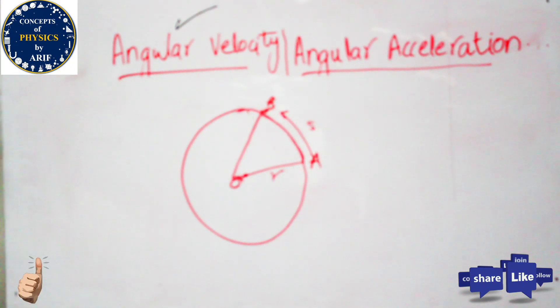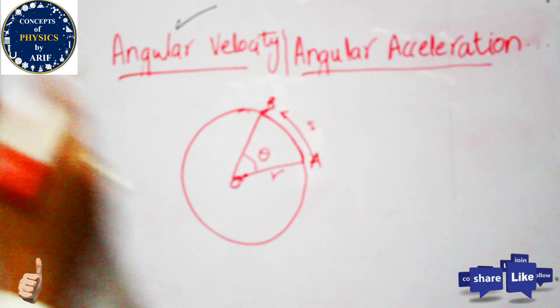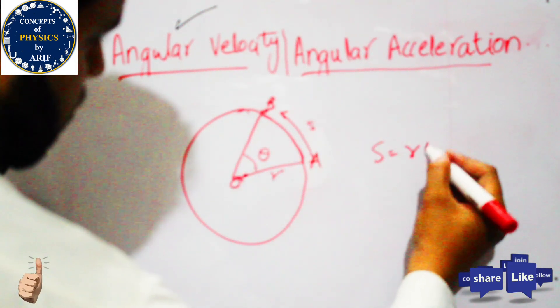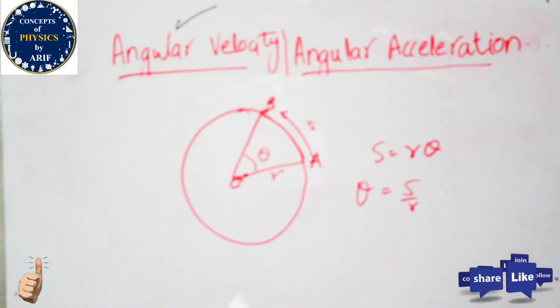And this is theta. We can say that S equals R theta, or theta equals S over R. This theta is known as angular displacement.